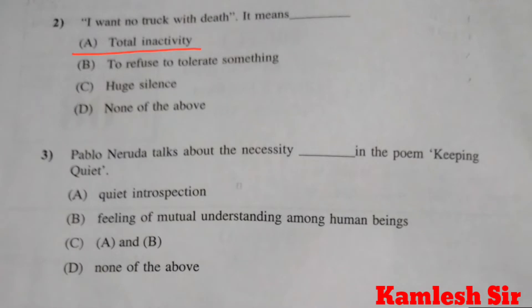Third: Pablo Neruda talks about the necessity dash in the poem Keeping Quiet. The right answer of question number 3 is C, both A and B — quiet introspection and feeling of mutual understanding among human beings.